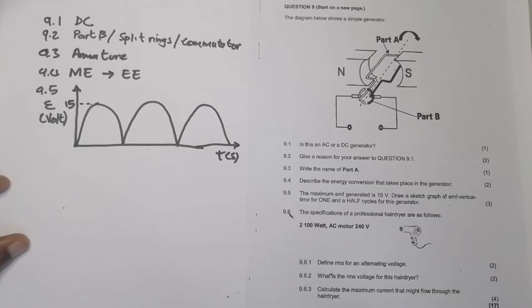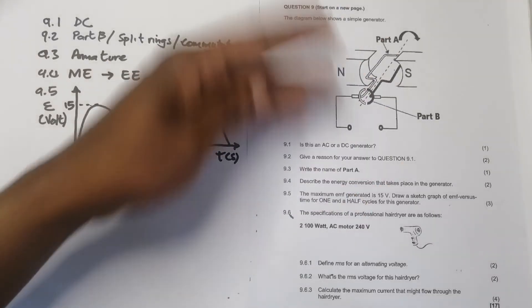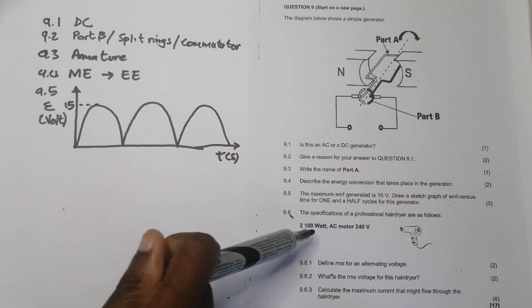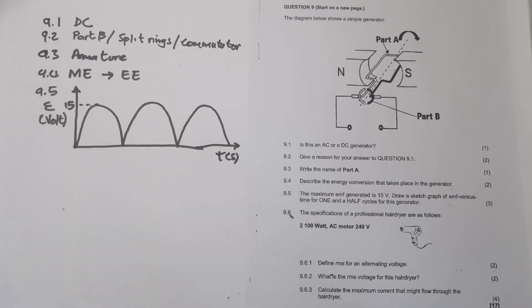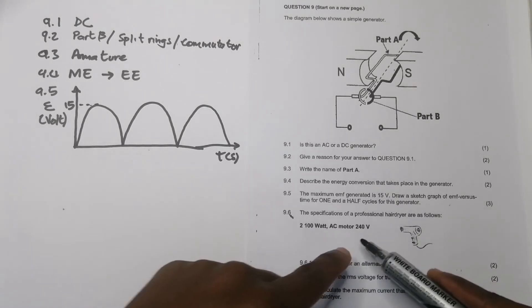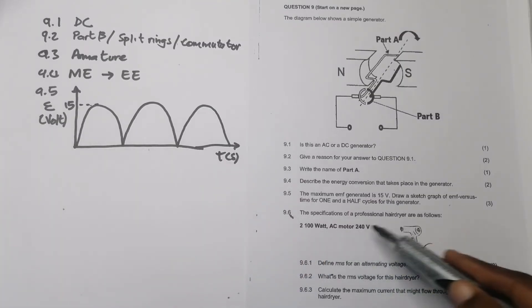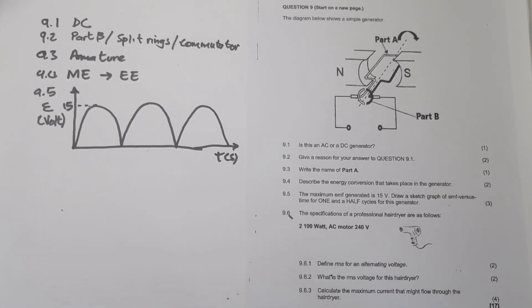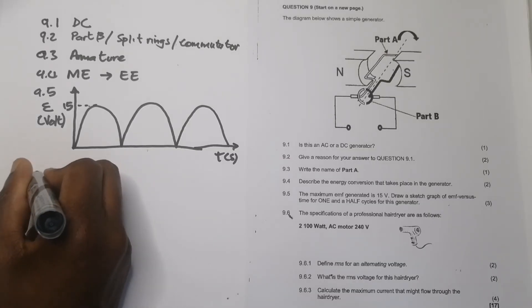They say the specifications of a professional hair dryer are as follows, so we are done with that theoretical part, now we're moving into the calculations. They give us there 2100 watts and an AC motor of 240 volts. Now please note, the moment that they give you a power rating like that, the power rating is usually accompanied with the RMS voltage.